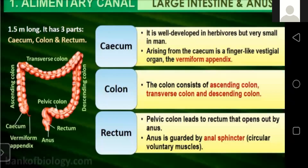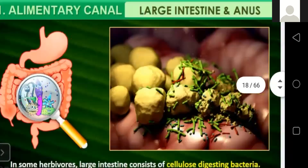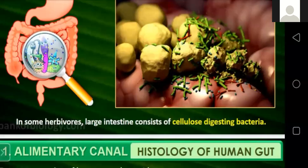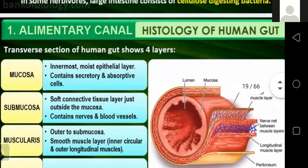The colon consists of ascending colon, transverse colon, and descending colon. After that is the rectum, the last part of the large intestine. The pelvic colon leads to the rectum, which opens out through the anus guarded by the anal sphincter, a circular voluntary muscle. In some herbivores, the large intestine contains cellulose-digesting bacteria. Humans cannot digest cellulose, so the large intestine is not well developed in our case.